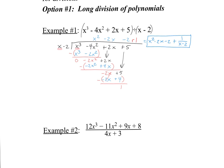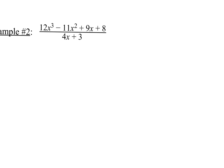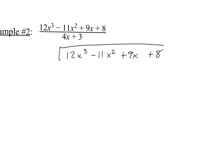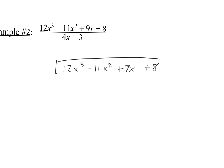Now let's look at example 2, also using long division. I'll need a lot of space. So 12x³ minus 11x² plus 9x plus 8 goes under the division bar, and 4x plus 3 goes on the left. What times 4x gives 12x³? I need a 3 and an x², so I write 3x² on top. 3 times 4 is 12, and x² times x is x³. I also multiply 3x² times 3, giving 9x². Then I subtract.